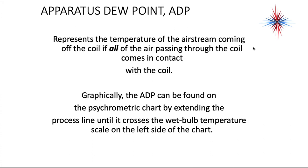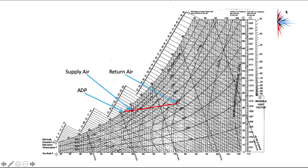The apparatus dew point, or ADP, represents the temperature of the airstream coming off the coil if all of the air passing through the coil comes in contact with the coil. Now, this actually rarely happens that all of the air passing through comes in contact. Graphically, the ADP can be found on the psychrometric chart by extending the process line until it crosses the wet bulb temperature scale on the left of the chart.